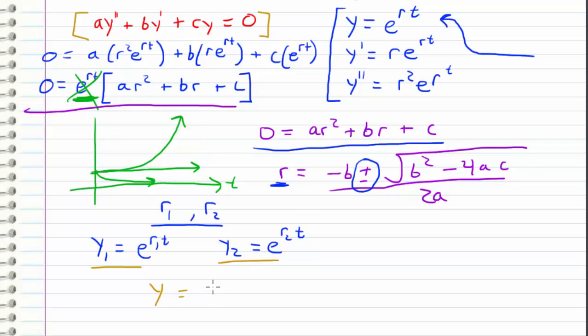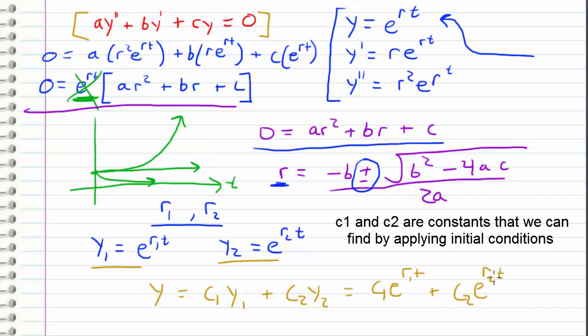We'll call y, and this is just going to be equal to the linear combinations of y1 and y2, which comes out to be c1 times e to the r1t plus c2e to r2 times t.